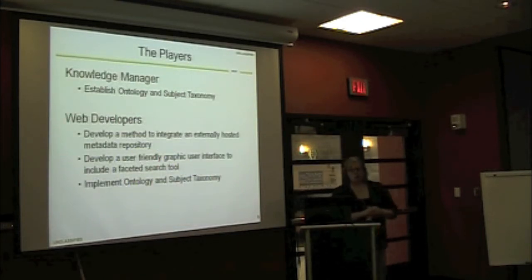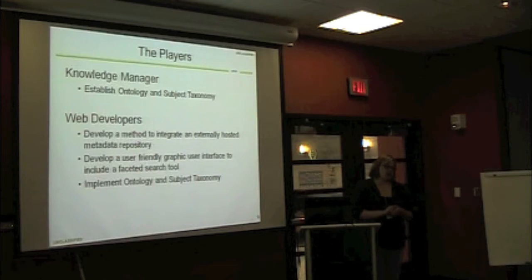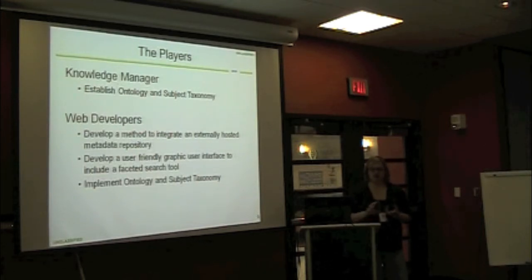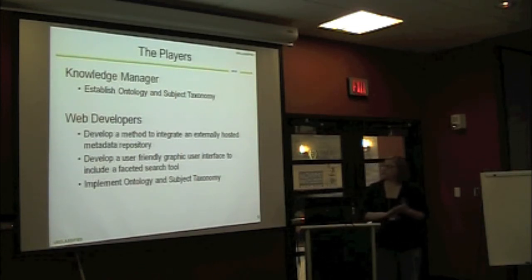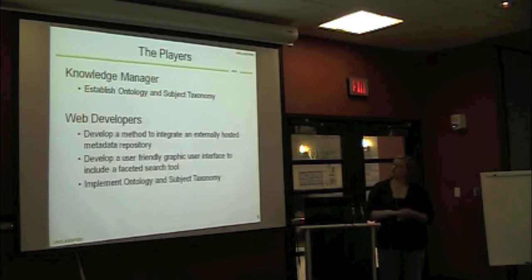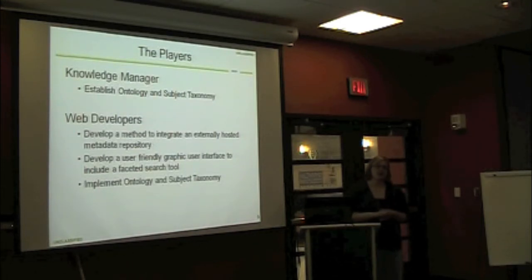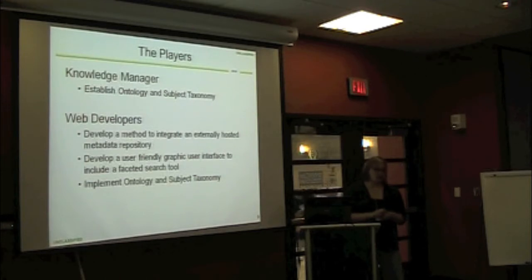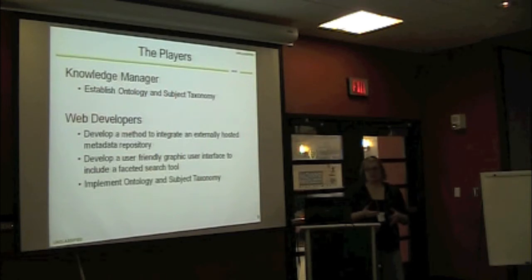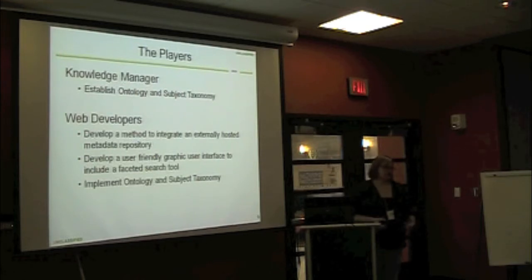So SAIC specifically, on our contract, got assigned a special task order to fill two positions: a knowledge manager and another web developer. The knowledge manager's main job was to establish an ontology for this new enterprise solution, as well as a subject taxonomy. It's one of the biggest ways that we try and search data is by its subject, its aboutness. And the web developer to basically develop this user interface.